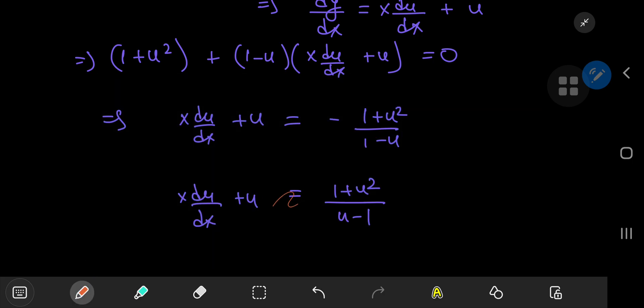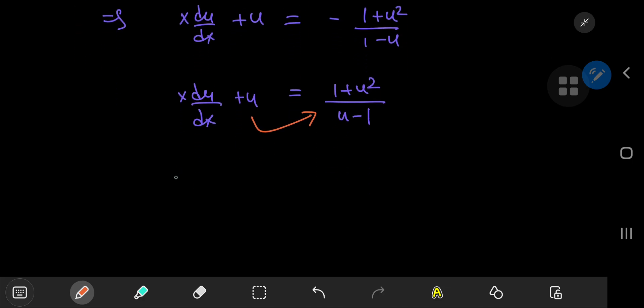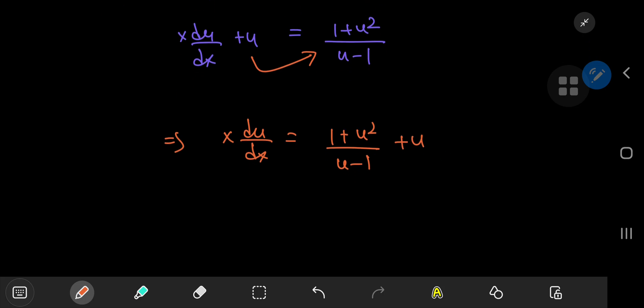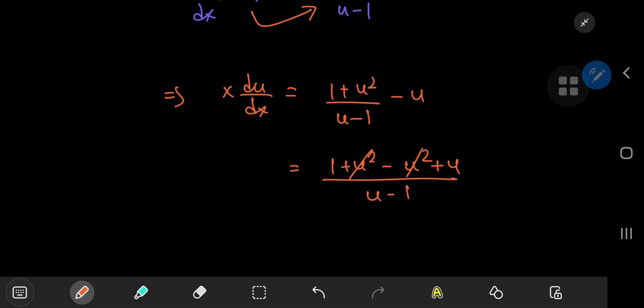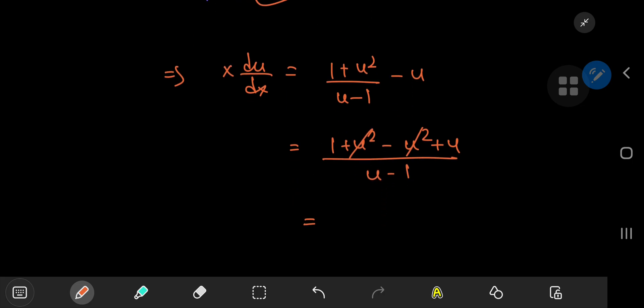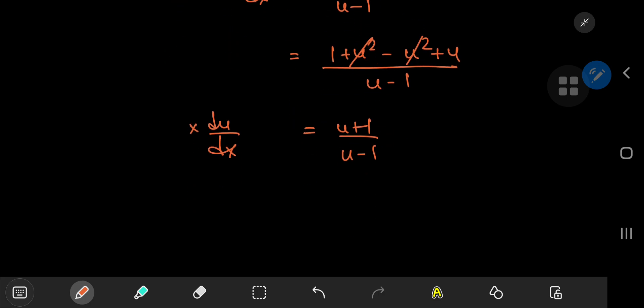So all you should do now is just take this u term to the right hand side, which implies that x times du by dx equals one plus u squared divided by u minus one minus u. And on simplification, you have one plus u squared minus u squared plus u divided by u minus one. So the u squares cancel out quite nicely. And notice that you now have a very simple and sweet separable differential equation in u and x.